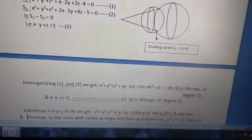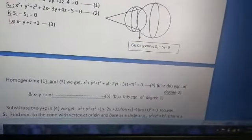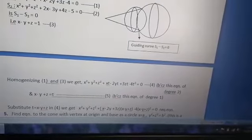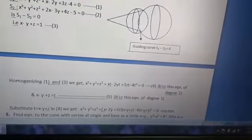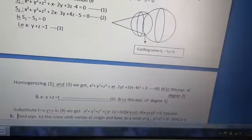And now we have to homogenize equations 1 and 3. Equation 1 is x² + y² and so on. We have to substitute wherever first degree terms are there, 1t there. And constant is there, that is t². So it becomes homogeneous.